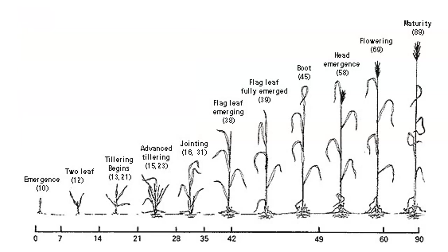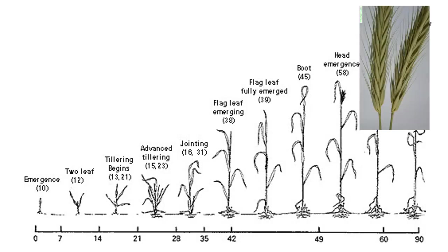Then we get what we call the flag leaf. The flag leaf is really the last leaf that comes up before the inflorescence — it's kind of like a little flag up at the top. Then after that, we get the emergence of the inflorescence. We get the flowering part where you'll find the stamens, the stigma, and the style visible.